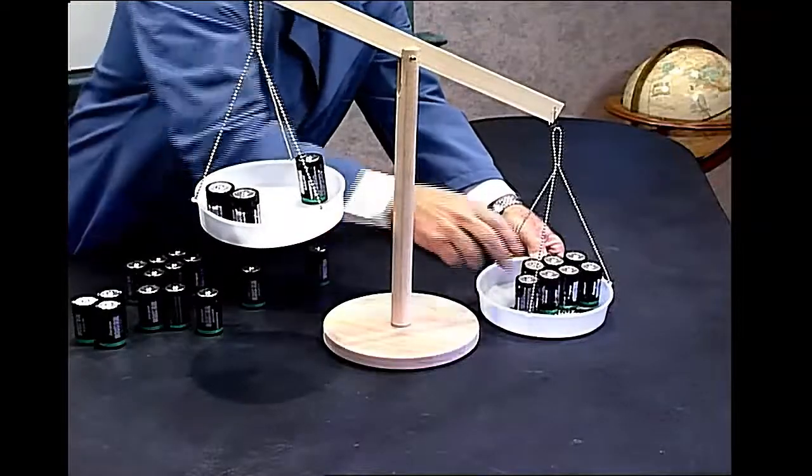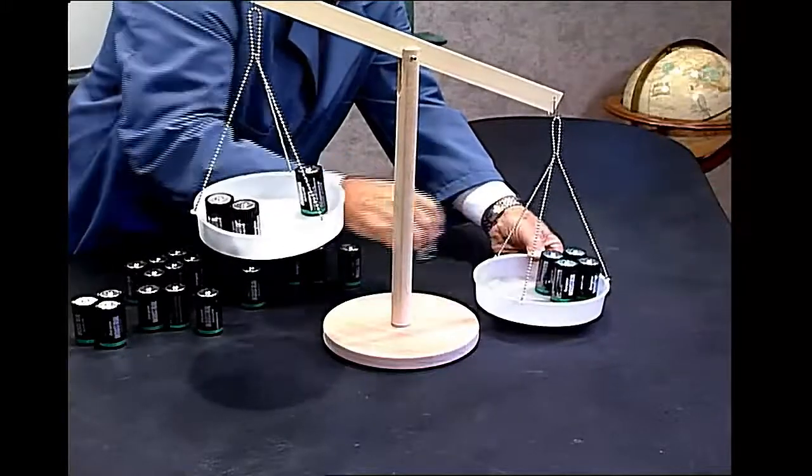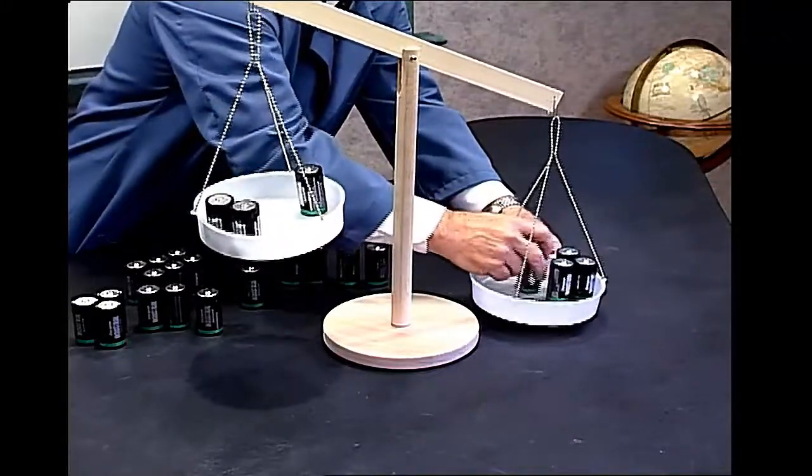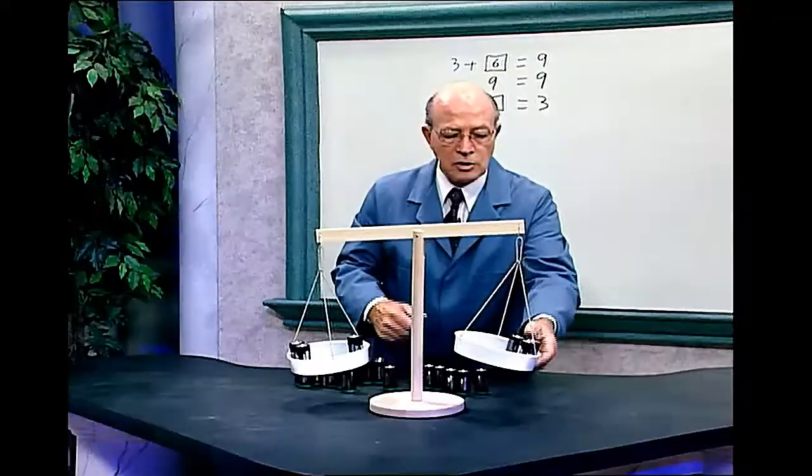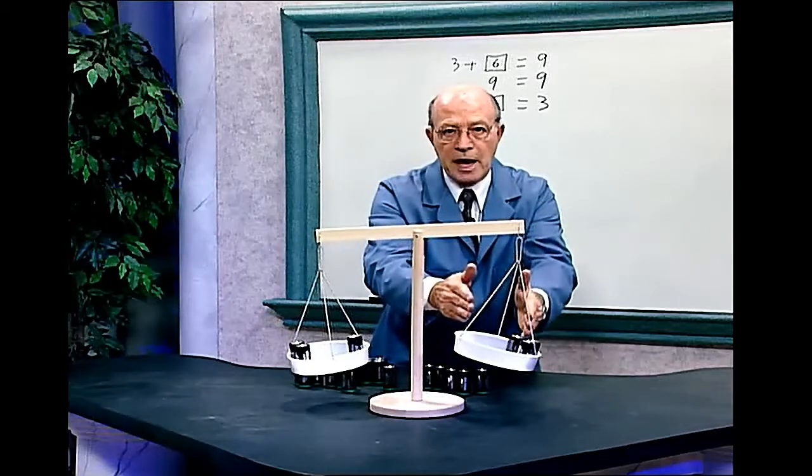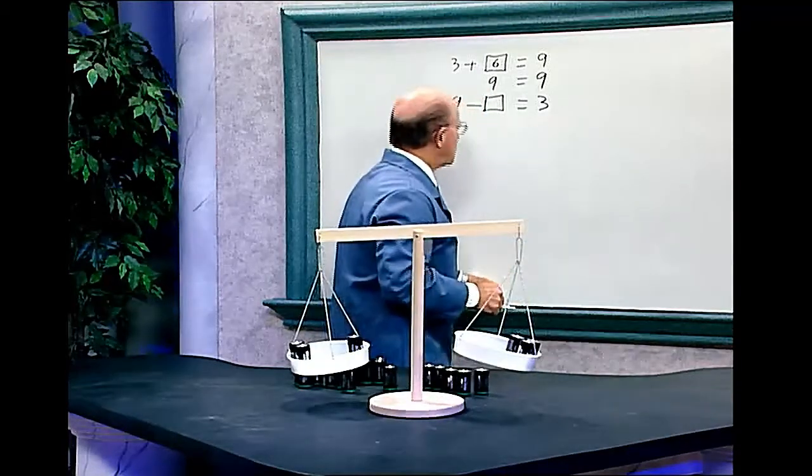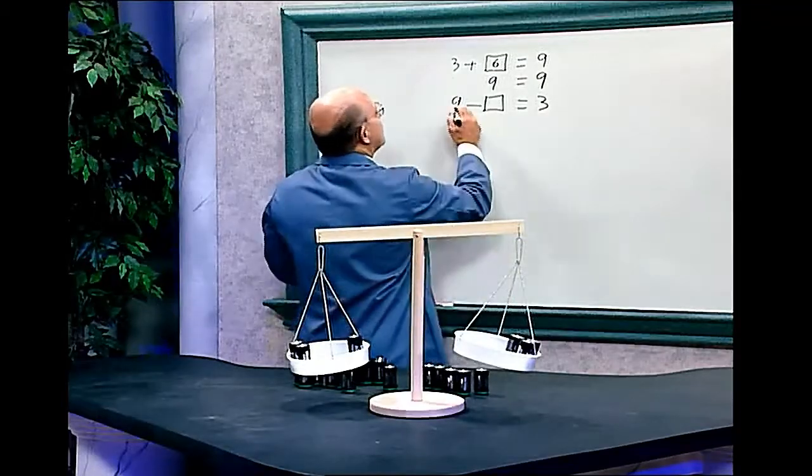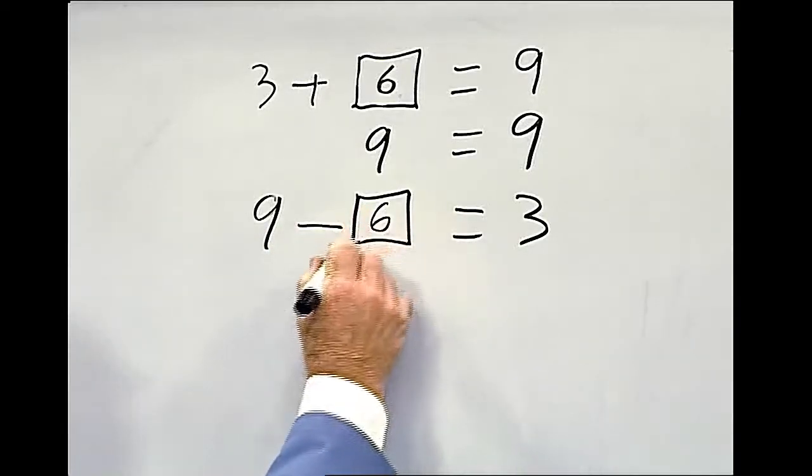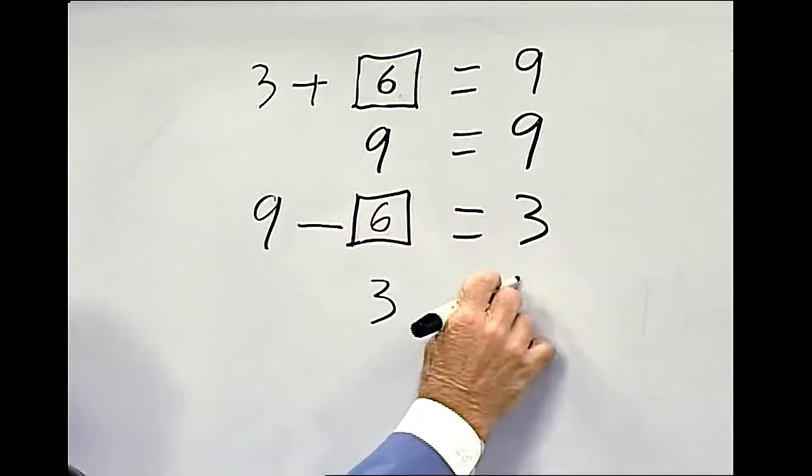1, 2, 3, 4, 5, 6. As you can see, we had 9 batteries over here and 3 on this side. We had to remove 6 batteries for this balancing scale to be equal. Let's do the problem on the board. 9 minus 6, 9 minus 6 equals 3 equals 3.